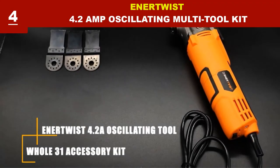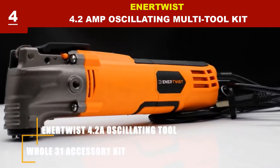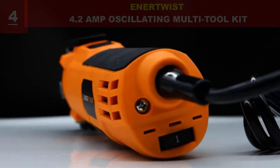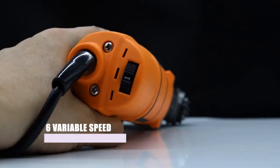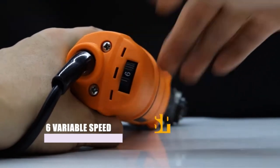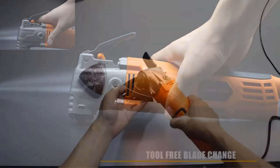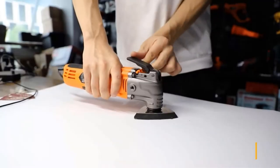This oscillating tool is featured with a 4.2 Ampere pure copper motor that delivers strong performance to get the jobs done. By using this tool, you can cut things like metal, bolts, tile, nails, wood, concrete, plumbing pipes, scrap sealant or old caulk.